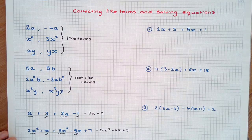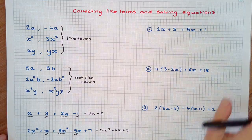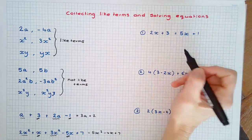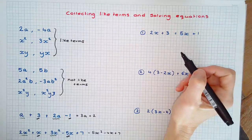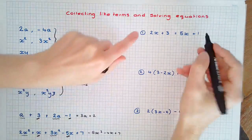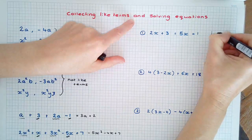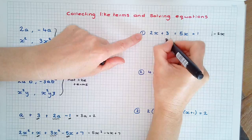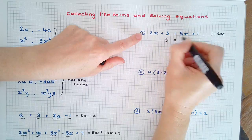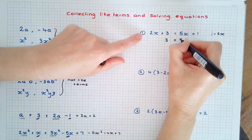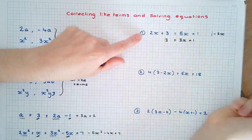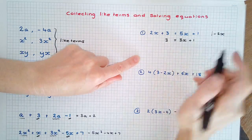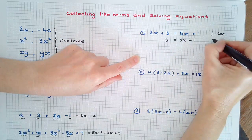Like terms should be collected when solving equations. Here we have like terms on the left-hand side and the right-hand side. We're going to first subtract 2x to remove this like term from the left-hand side, leaving x, and subtract 2x from the right-hand side, leaving 3x. Now we just go through and solve our equation as a normal two-step equation.